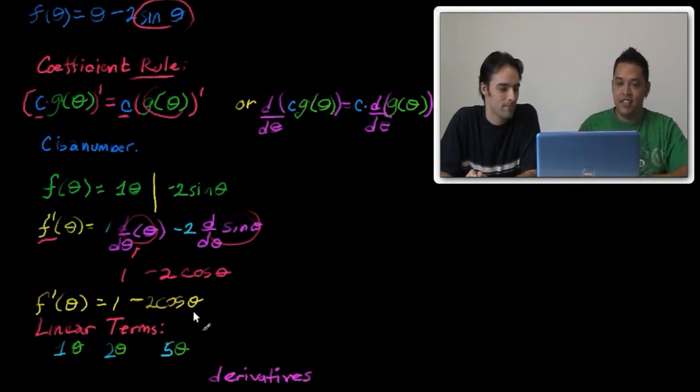And that is, when you have a term that looks like this, that is a linear term, I think a shortcut that you can use is, if let's say you had theta, and 2 theta, or 5 theta,